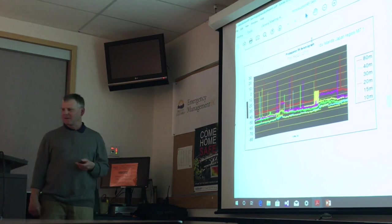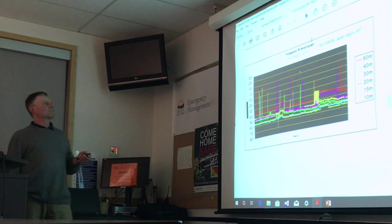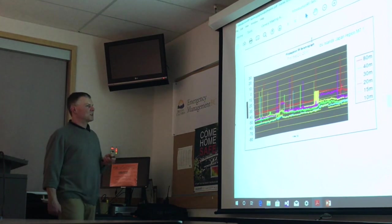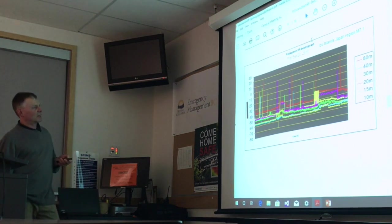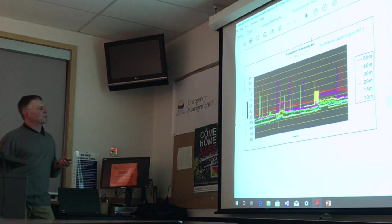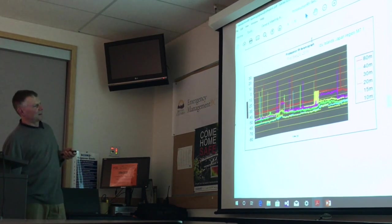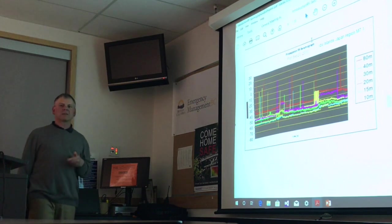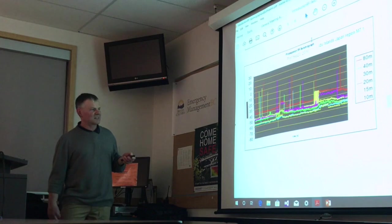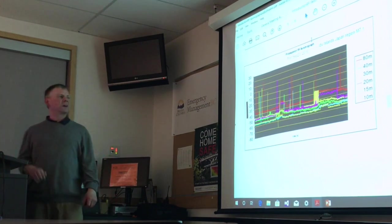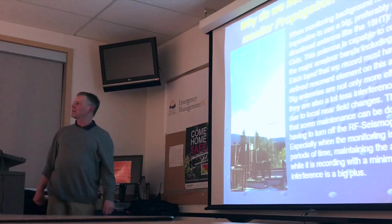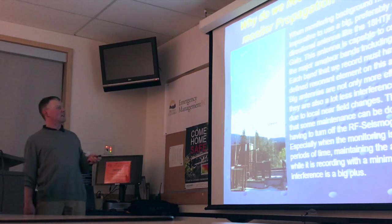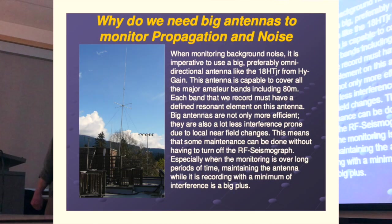Here is the Izu Islands, Japan region — M7.1 event. The noise level goes up quite rapidly, but this would be a really hard one to predict because the noise level rises after the fact. There's still a lot of research that needs to be done, which is why we need big resonant antennas.